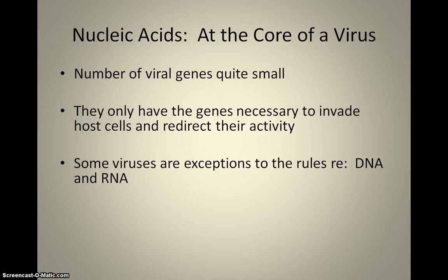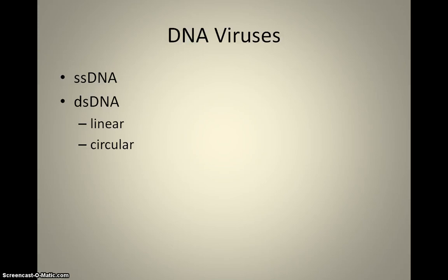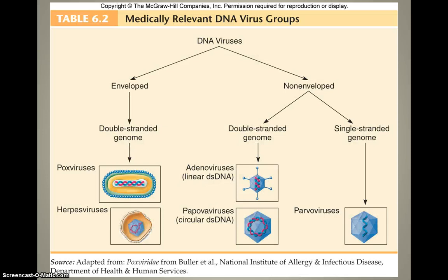We group viruses into different groups based on their nucleic acids, their envelopes, and the shape of their nucleic acids. DNA viruses can be either single-stranded or double-stranded, and double-stranded can be linear or circular. Looking at medically significant viruses, we first divide them into enveloped and non-enveloped. All enveloped DNA viruses are double-stranded — those are pox viruses and herpes viruses. Non-enveloped viruses can be double-stranded or single-stranded: single-stranded are parvoviruses; double-stranded linear are adenoviruses; and double-stranded circular are papoviruses. That's how we divide them into different taxonomical groups or families.